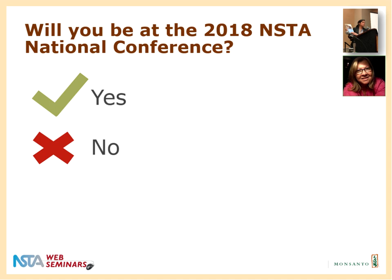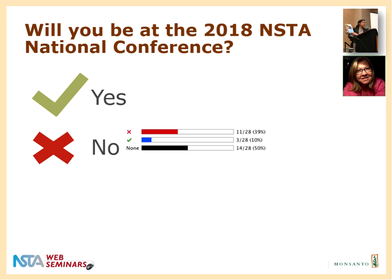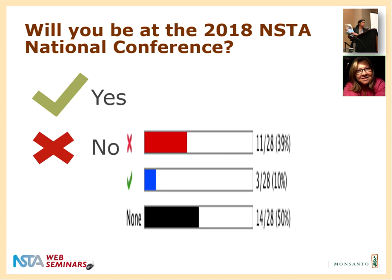For those of you who are not sure where the polling button is, it's right underneath your name — it's the fourth icon over, and it has a green checkmark right now. Go ahead and use the green checkmark if yes, you're coming to the national conference, and a red X if you're unable to attend. For the three of you who will be at the national conference, be sure to stop by — we'll have some resources for you.